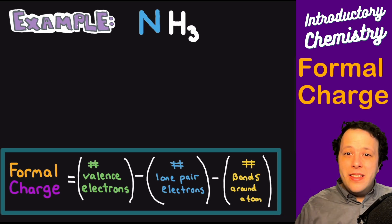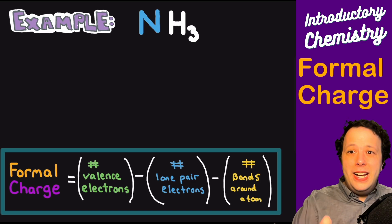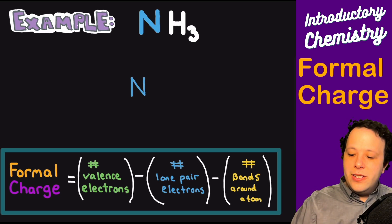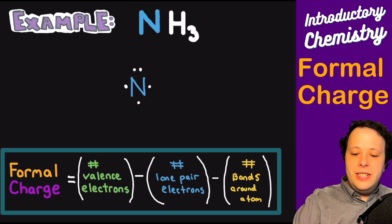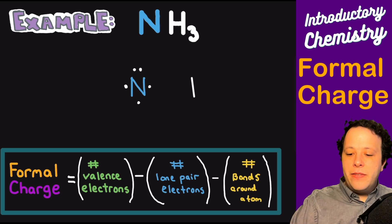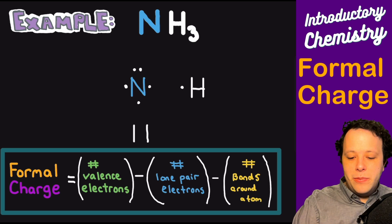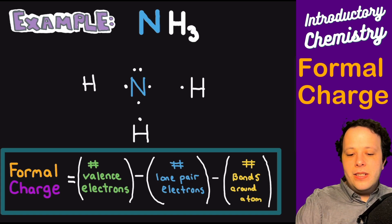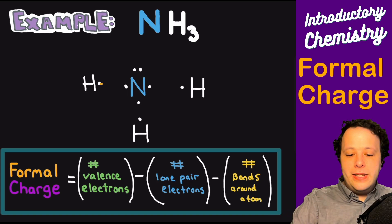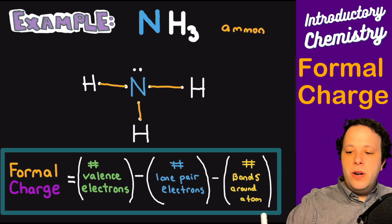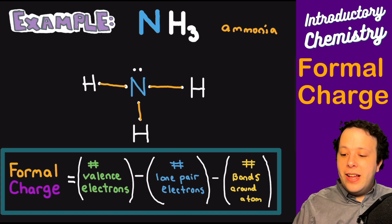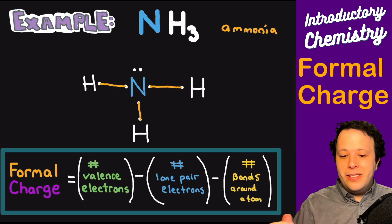With writing Lewis structures, the first thing is that whenever we have a covalent bonded molecule, the central atom is always written first in the molecular formula. So nitrogen would be the center here, and from the periodic table it has five valence electrons, whereas hydrogen — and we have three of them bonding — has one valence electron. One tip is to line them up with all the lone electrons, put all the hydrogens in, and then bond them together by connecting them. This is ammonia.